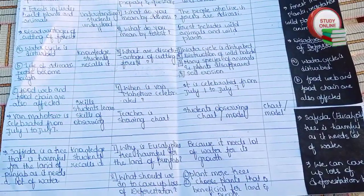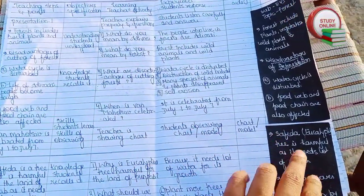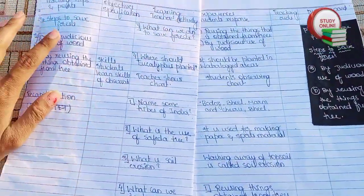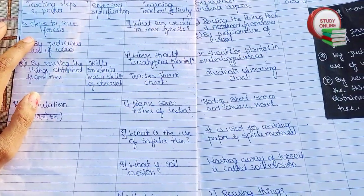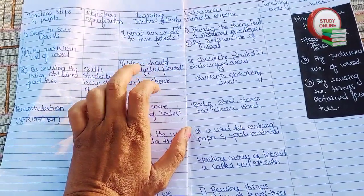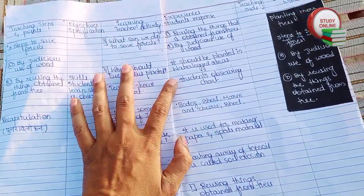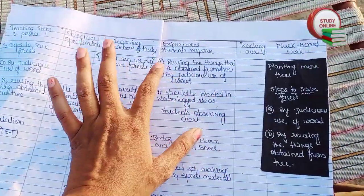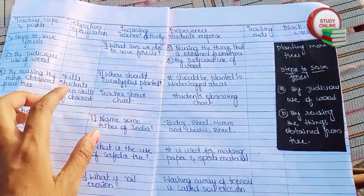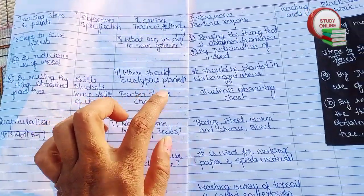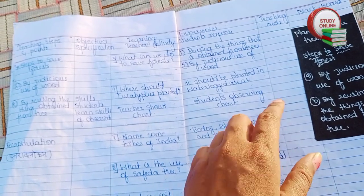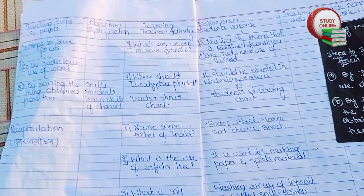Now let's turn the page and see the rest of presentation two. Here you can see the remaining question-and-answer section we have to ask students, along with the expected answers. For blackboard work, we write all those things here as well. For skills, the teacher shows charts, students observe the chart, and the teaching aid used is a chart.